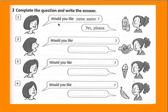For example, number one: Would you like some water? Water is uncountable, so we use 'some' in the question. The person is smiling, so they answer 'Yes, please.' Now continue to number two: Would you like... ? We see a food item here. What food is it?